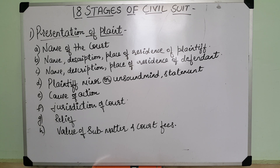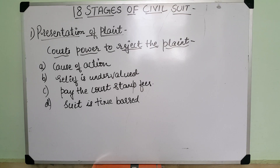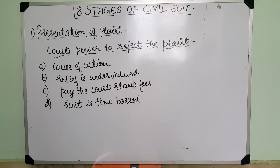The court has power to reject the plaint on the following grounds. The first one is the plaint does not disclose the cause of action. The second one is where the relief claimed is undervalued and the plaintiff fails to correct the valuation within the time fixed. The third one is if the relief is properly valued but the plaintiff fails to pay the court fees. The fourth one is where the suit appears to be time barred. However, rejection of the plaint does not bar the plaintiff from presenting a fresh suit.